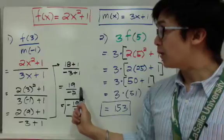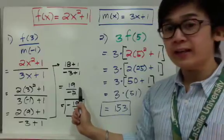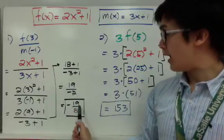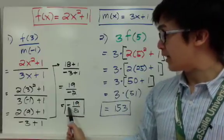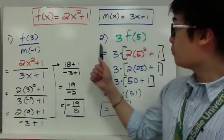Sometimes you will see the answer written as negative 19 over 2.